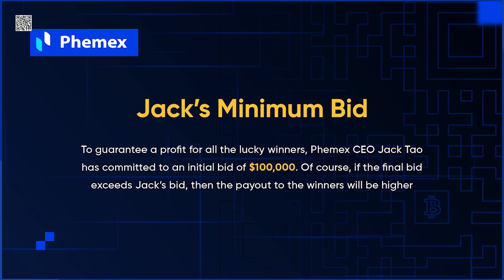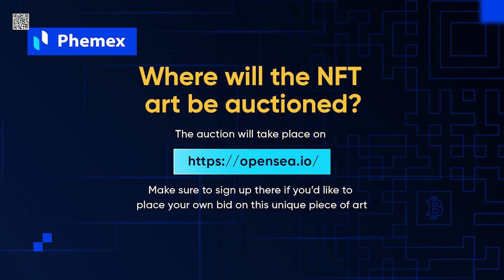Let's take a look at what you'll be eligible to win. Jack is going to place a minimum bid to guarantee a profit for all the lucky winners, with an initial bid of $100,000. If more people bid after this, the payout to the winners will be higher, based on whatever the ending bid is. The auction will take place on OpenSea — if you'd like to place your own bid, sign up and do it there.